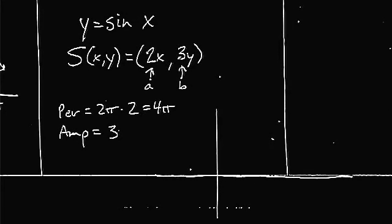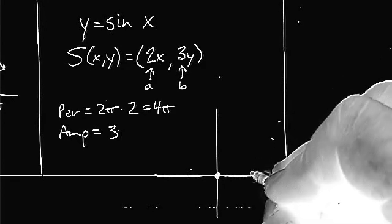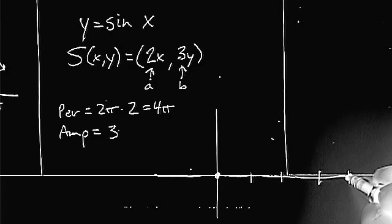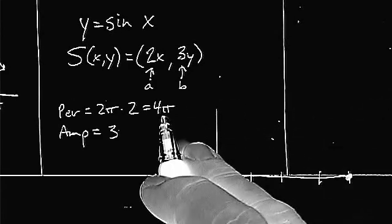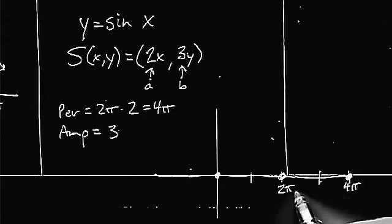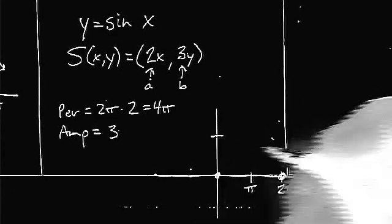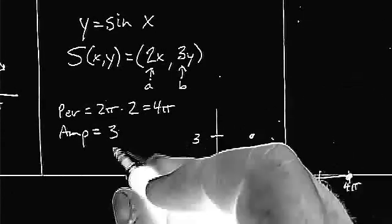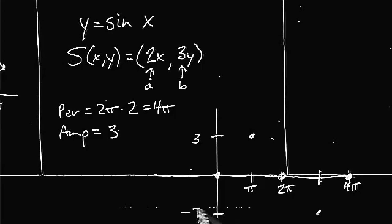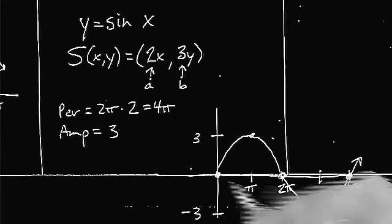Remember your basic sine function — it starts at the origin instead of its highest point. It's back at the center line when repeating its pattern, but now it's 4 pi instead of 2 pi. Halfway in between, at 2 pi, it's back at the center line. Halfway between 0 and 2 pi, at 1 pi, we're at our maximum, which is 3. And halfway between 2 pi and 4 pi, at 3 pi, we're at our lowest point, negative 3. There's our basic sine wave with the scale changes.